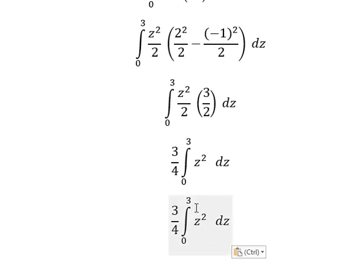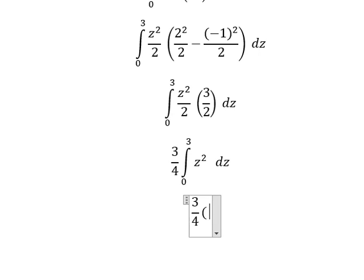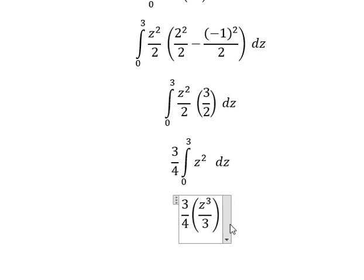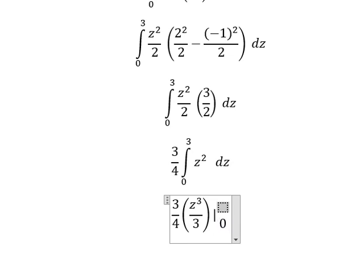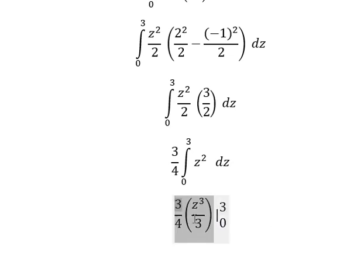The integration of z squared gives us z to the power of 3 over 3, and we put the bounds from 0 to 3.